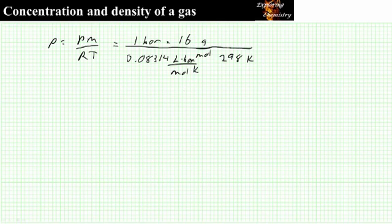Now looking at the units. Bar is going to cancel with bar. Mole is going to cancel with mole. Kelvin with kelvin. So the units that we are left with, grams per liter, are what we would expect for units of density. And when you substitute this into a calculator, you find out that the density of ethane is 0.646 grams per liter.